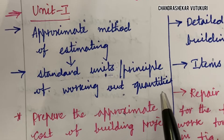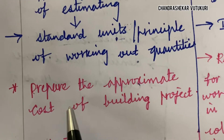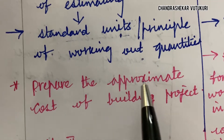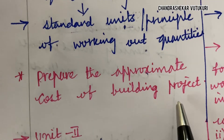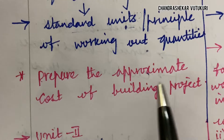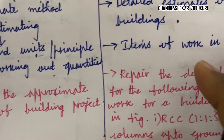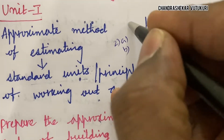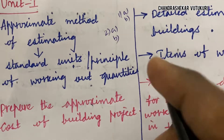The long questions are all related to problems only. For example: prepare the approximate cost of a building project — they will give you a 2D diagram of a building construction where you need to work out the approximate cost for the given details. This may cover questions 2A as well as 2B, and 1A-B will also be covered from this topic.